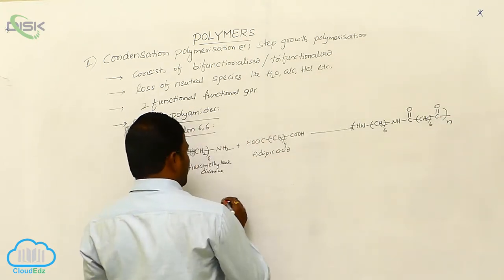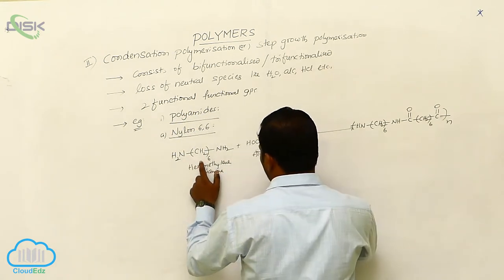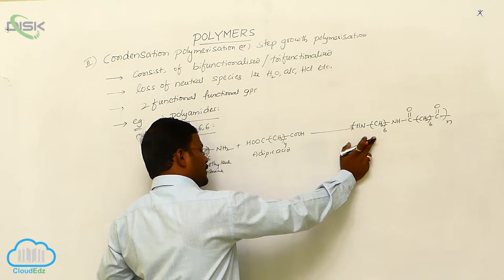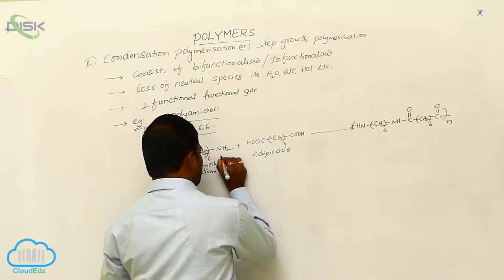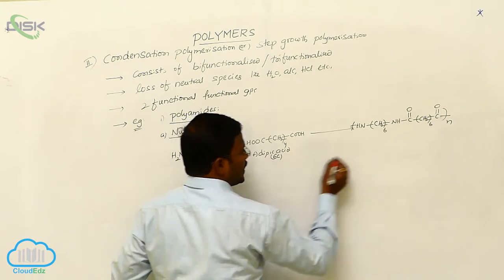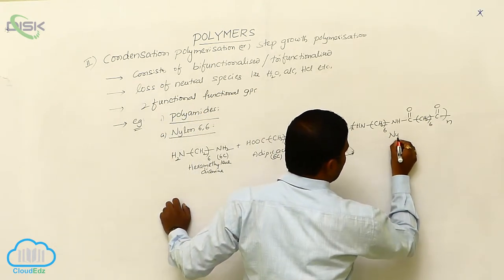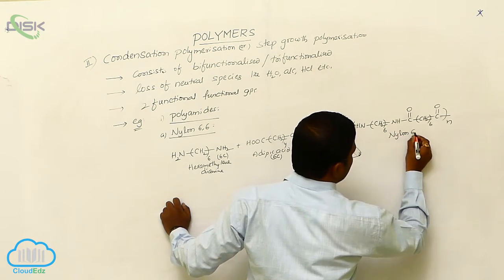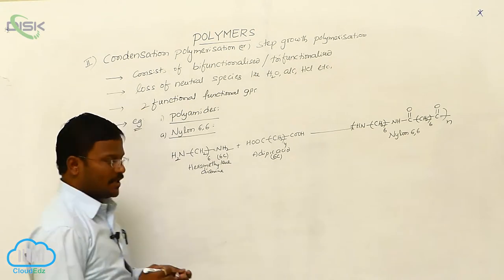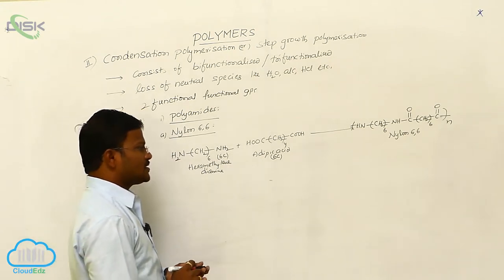As per our previous cases, the two monomers which are required for the preparation of nylon are 6 carbon species. This is also 6 carbon species. Hence, the resulting compound is called nylon 6-6. It indicates the two starting materials or monomers are having 6-6 carbons.